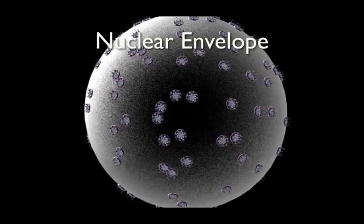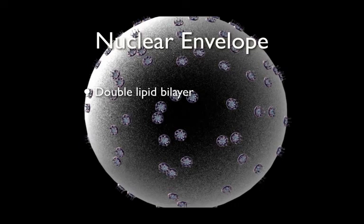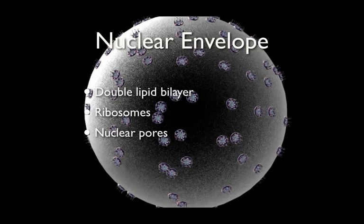The nuclear envelope protects and encloses the nucleus. It is made of a double lipid bilayer, consisting of an inner and outer membrane. The outer membrane has ribosomes scattered around its surface. There are also nuclear pores which penetrate the inner and outer membrane, allowing for the transport of materials, specifically mRNA, in and out of the nucleus.